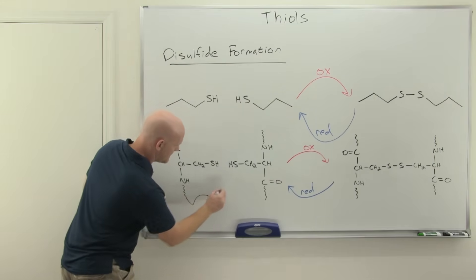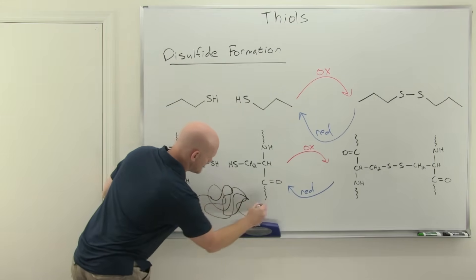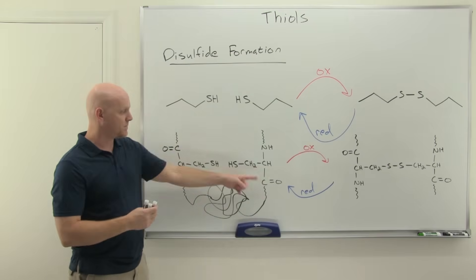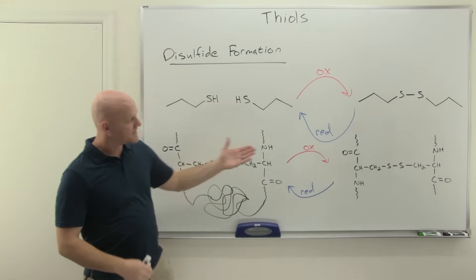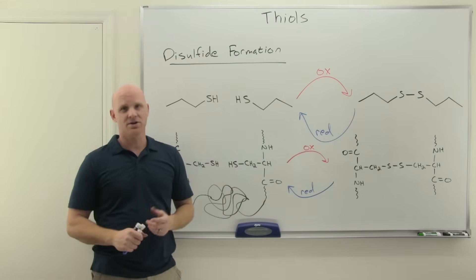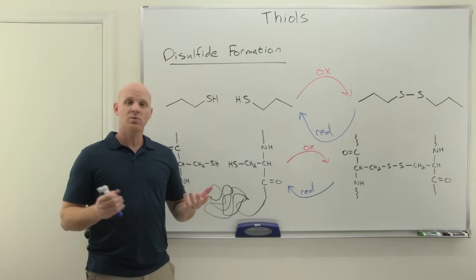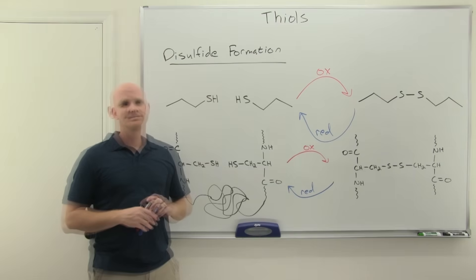Again, these disulfide bridges are really important for the structure of proteins. This could be a single protein—these might be connected as part of a single peptide structure—or it could actually be two separate peptides that end up bonded together in one of these disulfide bridges. Both examples exist in nature.